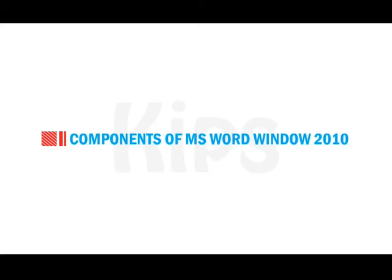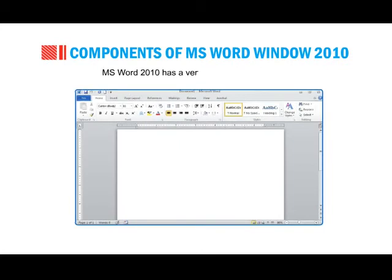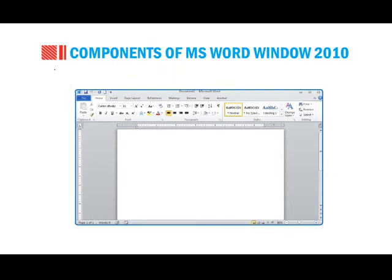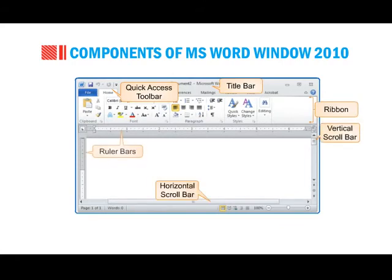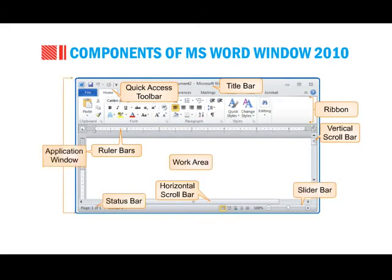Let's first start with components of MS Word Window 2010. MS Word 2010 has a very friendly user interface and provides a rich set of functionality. This session describes in detail the various elements of the user interface: Quick Access Toolbar, Title Bar, Ribbon, Vertical Scroll Bar, Horizontal Scroll Bar, Ruler Bars, Status Bar, Slider Bar, Work Area and Application Window.